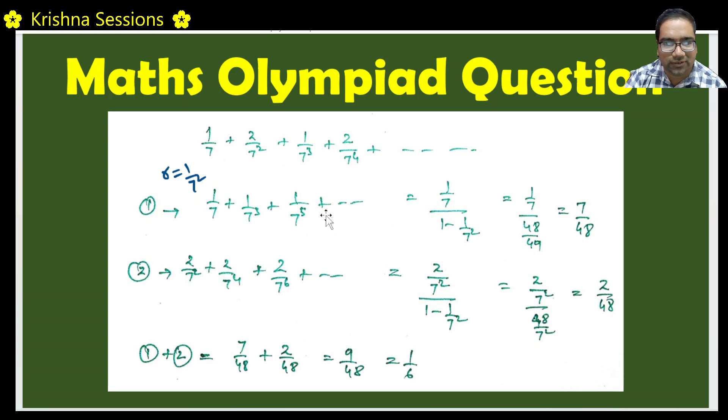Here this is in geometric series. We can all see that the ratio is 1 by 7 square. This 1 by this 1 is 1 by 7 square. This 1 by this 1 is 1 by 7 square, etc. We know the sum of this series which is a by 1 minus r, 1 by 7 by 1 minus r which is 1 by 7 square. This is 1 by 7 by 48 by 49.